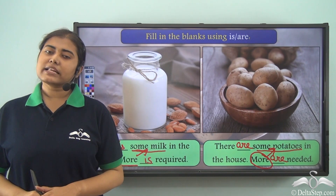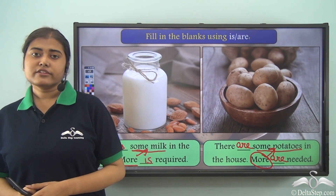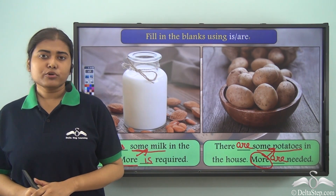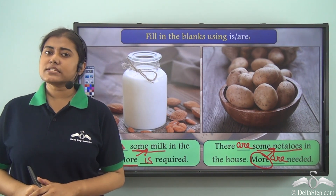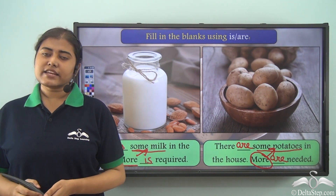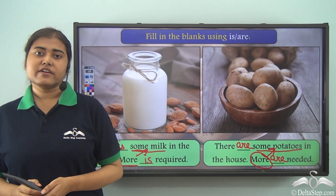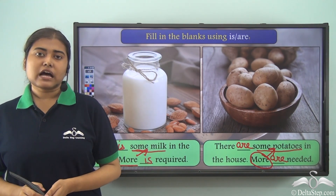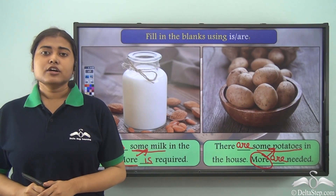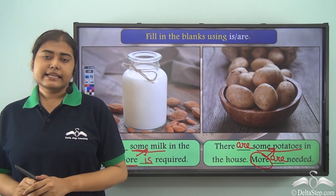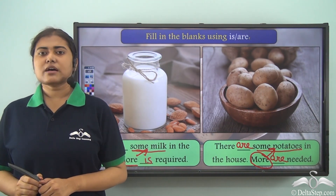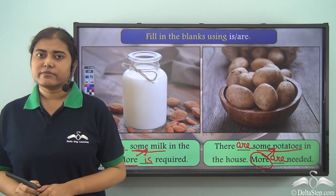Today we have learned some more rules related to subject-verb agreement, all dealing with countable and uncountable nouns. In most cases, countable nouns take plural verbs and uncountable nouns take singular verbs. If we want to show a part of a whole with a singular countable noun, we use a singular verb; if the countable noun is plural, we use a plural verb. Practice as many examples as possible. We will learn about more rules related to subject-verb agreement very soon.